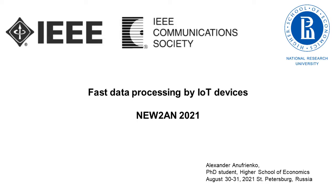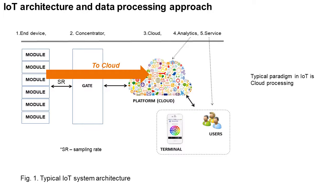There are various scientific and practical approaches to solving these problems. From the point of view of computational approaches and IoT architectures, systems are divided into two polarities: cloud computing and edge computing. However, key issues related to data processing at the first point of sensor network and IoT devices are still relevant and unresolved.